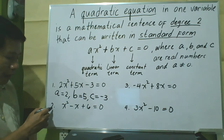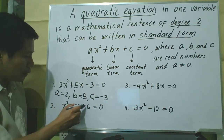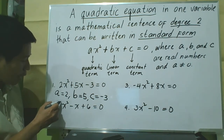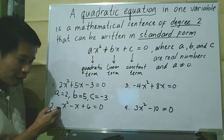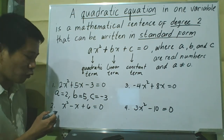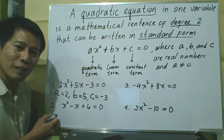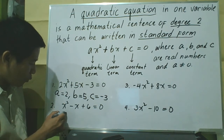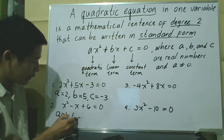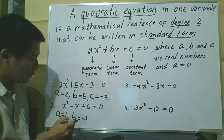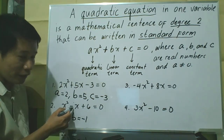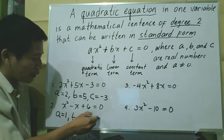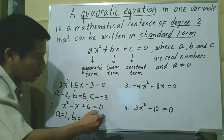The second example: x squared minus x plus 6 equals 0. The quadratic term is x squared. Since there is no numerical coefficient, it is understood to be 1, so the value of a is 1. Our b here is negative 1, because there is no coefficient — it is understood as negative 1. And our constant c is positive 6.